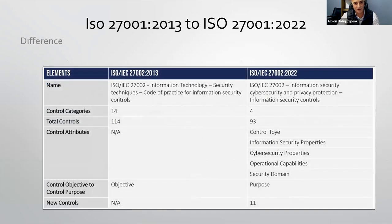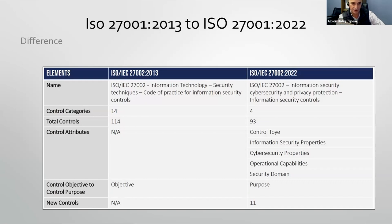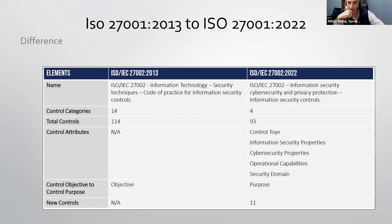Looking at the differences in ISO 27002 — the guidance for implementing ISO 27001 — in 2013 we had 14 control categories, now we have 4. Total controls went from 114 in 2013 to 93 in 2022. Control attributes, which were none in 2013, now include information security properties, cybersecurity properties, operational capabilities, security domain, and purpose — the old term 'control objective' is now called 'purpose'. There are 11 new controls added in the 2022 version.